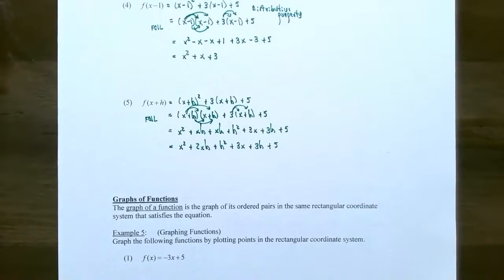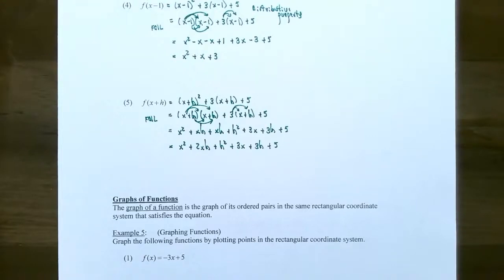This gives you an idea of how to evaluate a function at different input values, and this is a good place to stop our first video. In the next video we're going to look at how to graph functions. If you have any questions about the examples in this video or while working on the homework, please let me know. I'll see you in the next video when we talk about graphing functions and the vertical line test.